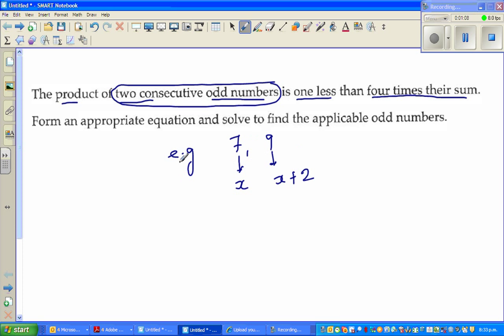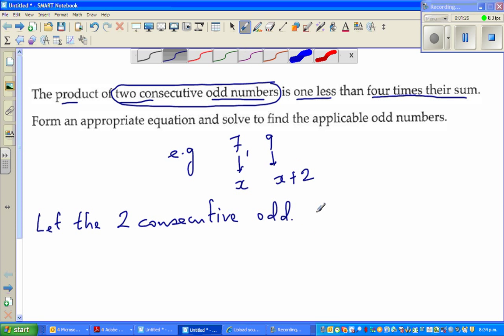This is true for any two consecutive odd numbers. So we'll write: let the two consecutive odd numbers be equal to x and x plus 2. Now this is a very important step in algebra - you have to let something.